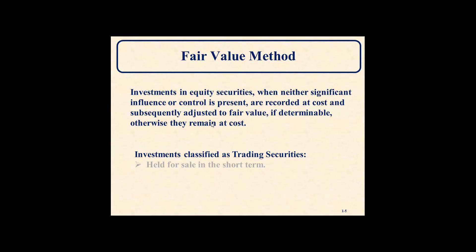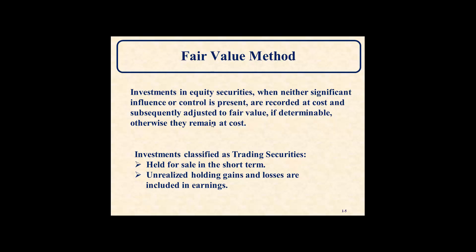The fair value method: Investments in equity securities where neither significant influence nor control exists are recorded at cost and subsequently adjusted to fair value. For example, if we purchased it for $100 and at the end of the year it's worth $110, we would mark it up to fair value. If you can't determine the fair value, it would remain at cost. These investments are classified as trading securities, meaning they are held for the short term, and unrealized gains or losses are included in earnings — so the mark-up or mark-down to fair value is reported in earnings.